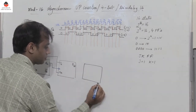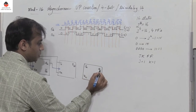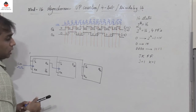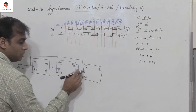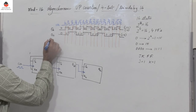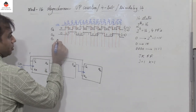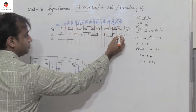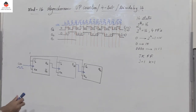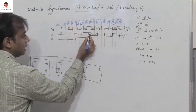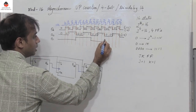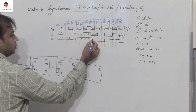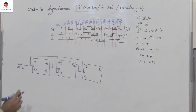For the third flip-flop, JC and KC are tied to 1, and QB is connected as the clock input, which is negative-edge triggered. Initially QC is reset to 0 and remains 0 until the first negative edge of QB arrives. Then QC toggles from 0 to 1, then 1 to 0, then 0 to 1, then 1 to 0, giving the pattern: 0,0,0,0,1,1,1,1,0,1. This waveform is divided by 8.